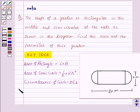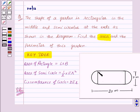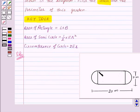Now let us see its solution. In this question, we need to find the area and the perimeter of the garden. First, we will find the area of the rectangular region, then the area of two semicircular regions, and we will add all three to get the required area of this garden.